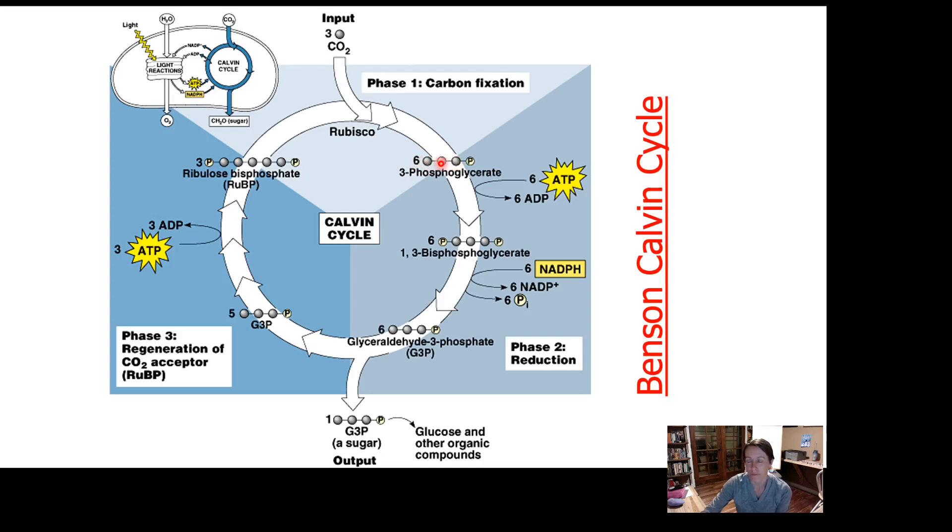To do that, it takes energy to join things together like that. This is an endergonic reaction. Joining things together, synthesizing, making something big and complicated—that takes energy. Where does the energy come from? It comes from ATP, and where does the ATP come from? It's the ATP that we made in the light-dependent reactions.